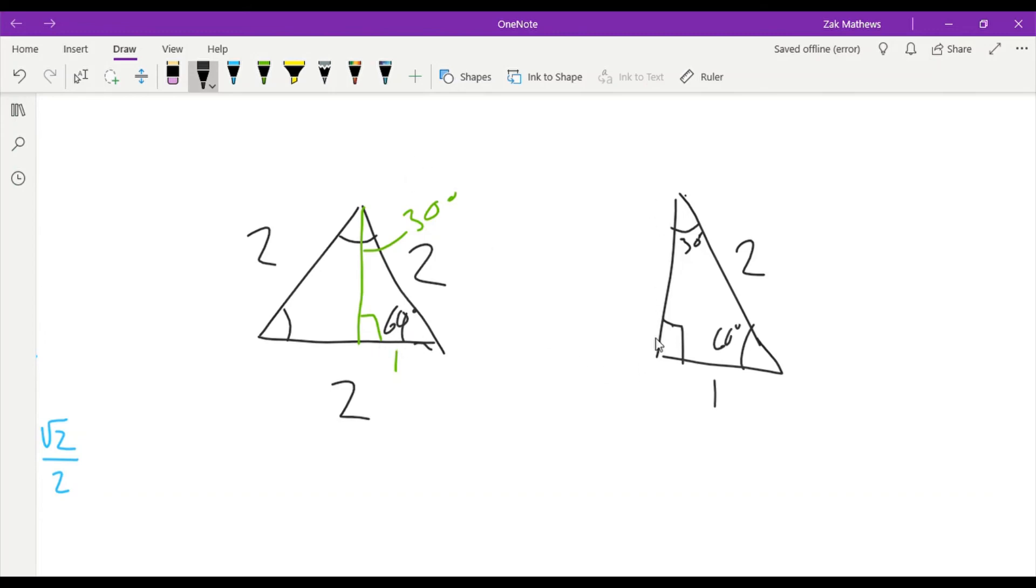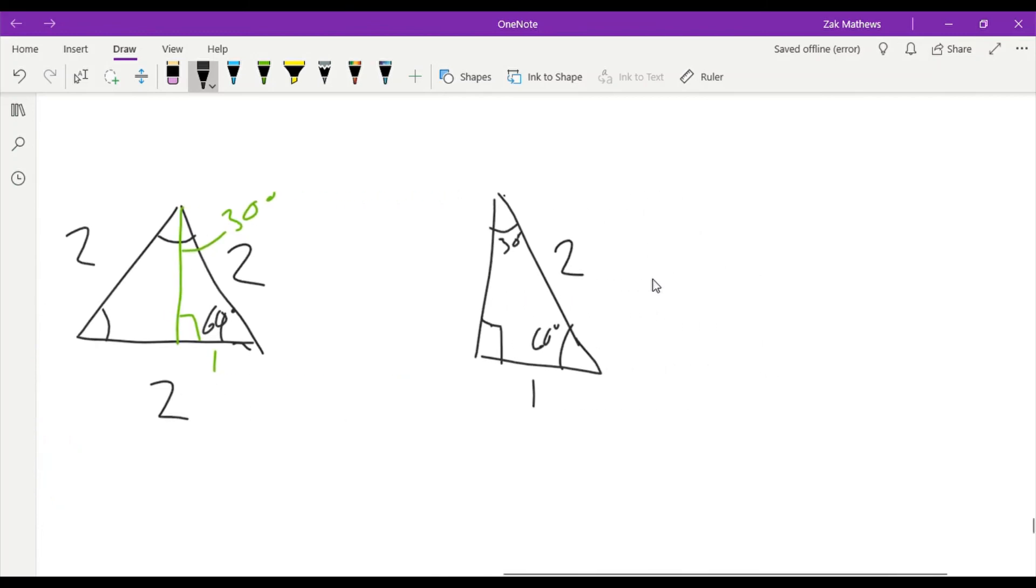And so then we'd have to use the Pythagorean theorem to figure out that third side. Well, we're going to have two squared is equal to, we'll call it y squared, the unknown. So we'll have one squared plus y squared. And so we'll have four equals one plus y squared, meaning y squared is equal to three. And so y is equal to the square root of three.